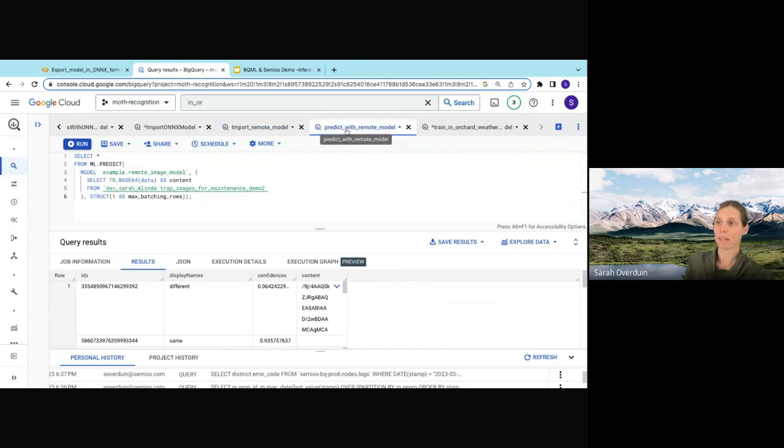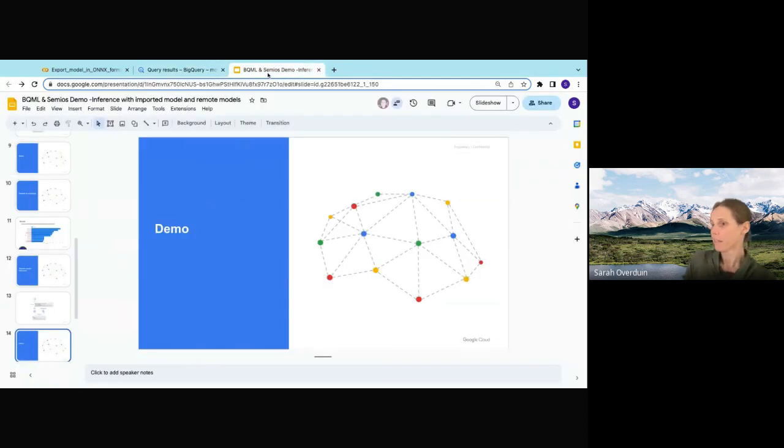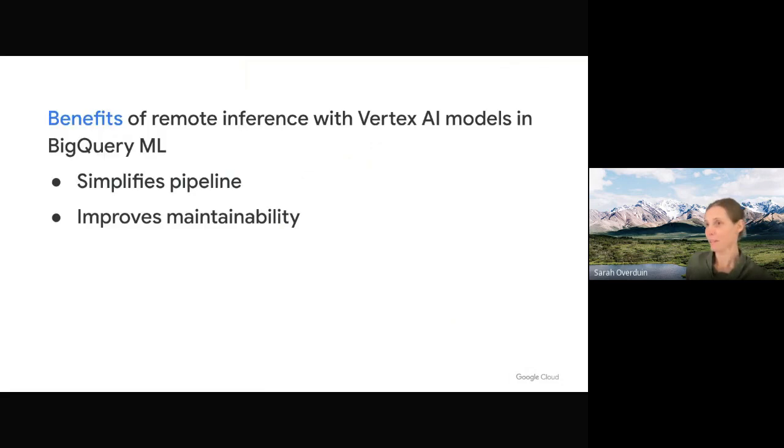And once we have the model, we can make predictions with it. And again, we just need to use ML predict. Because we're predicting on images again, we need to decode the images. So we use this to base64 for the image decoding, and then we can get our predictions back. So in this case, I'm just having this particular model here is only predicting two classes, different and same, and I'm getting the confidences for each of them. So that's how simple it is. So in terms of how that impacts us, the big impact is that it simplifies our pipeline and it improves our maintainability. So I think we're really excited to make use of this in the future. And I think it will help us iterate on models and help us run models and keep our pipeline running quickly and easily.